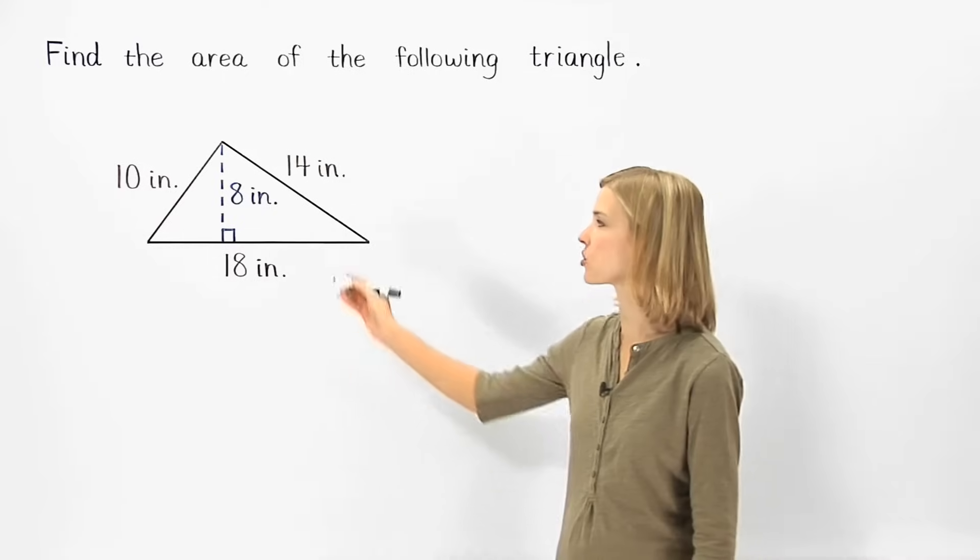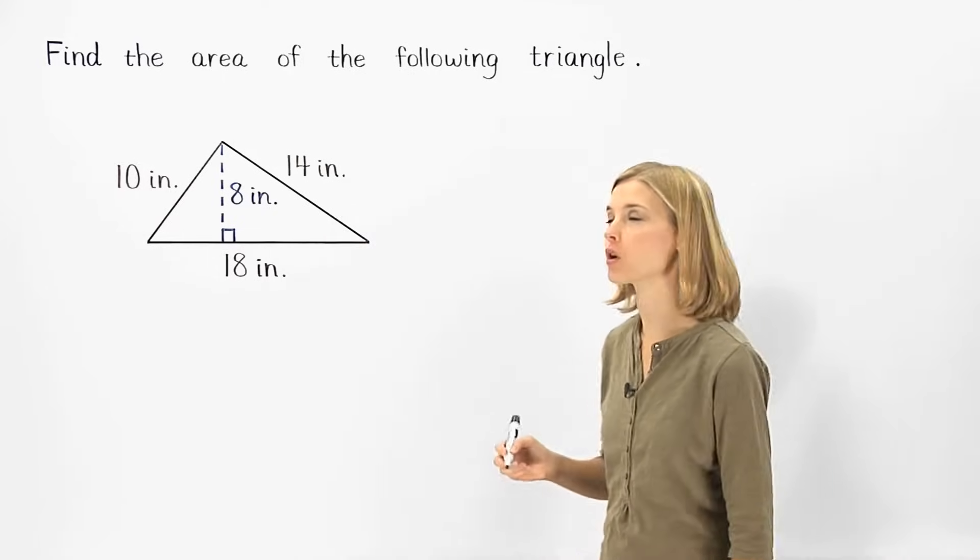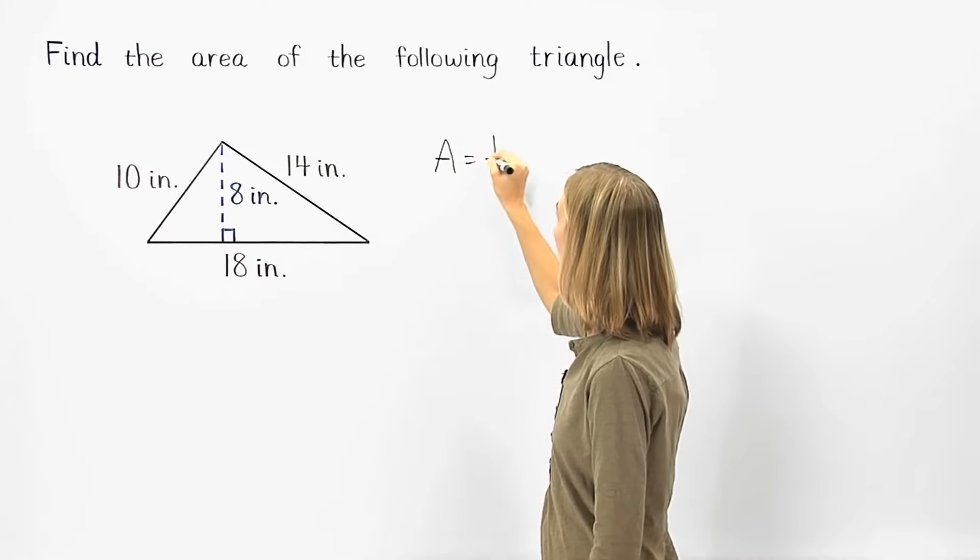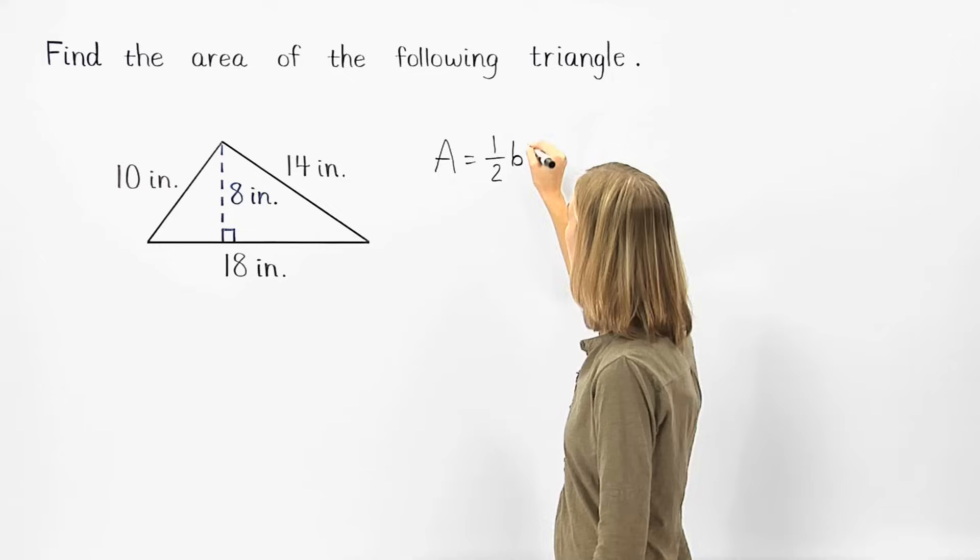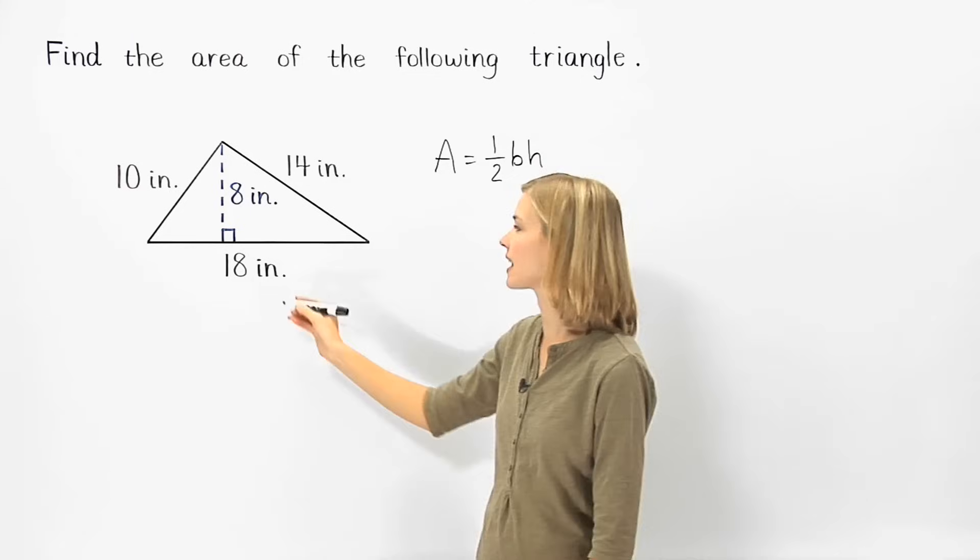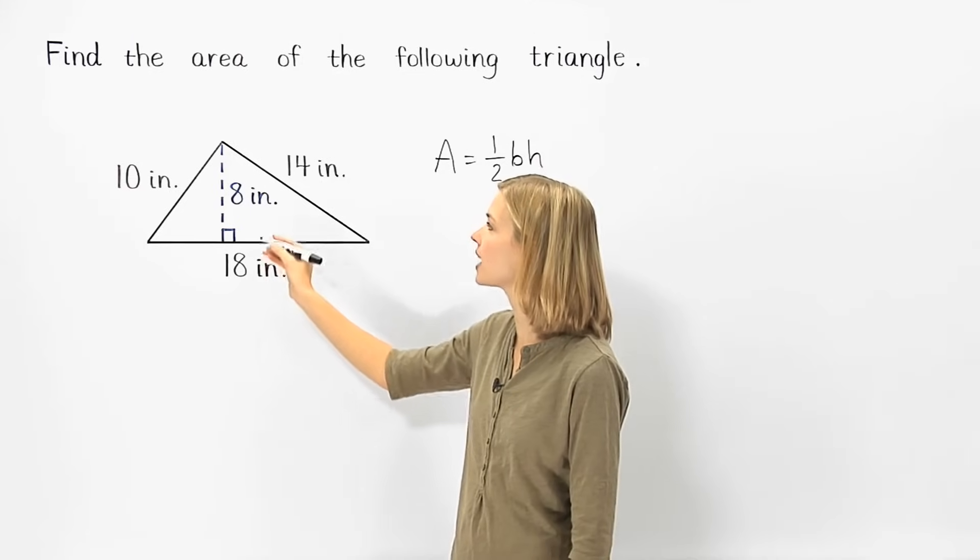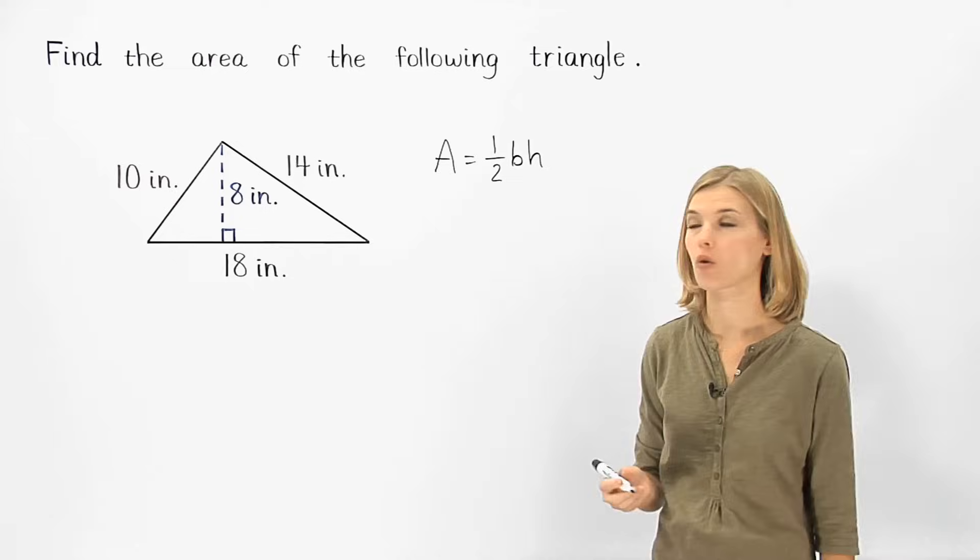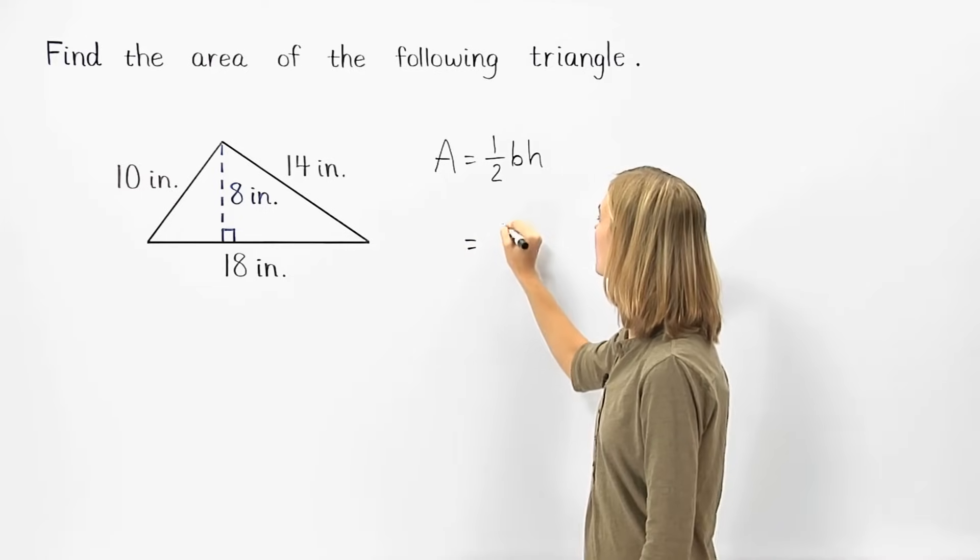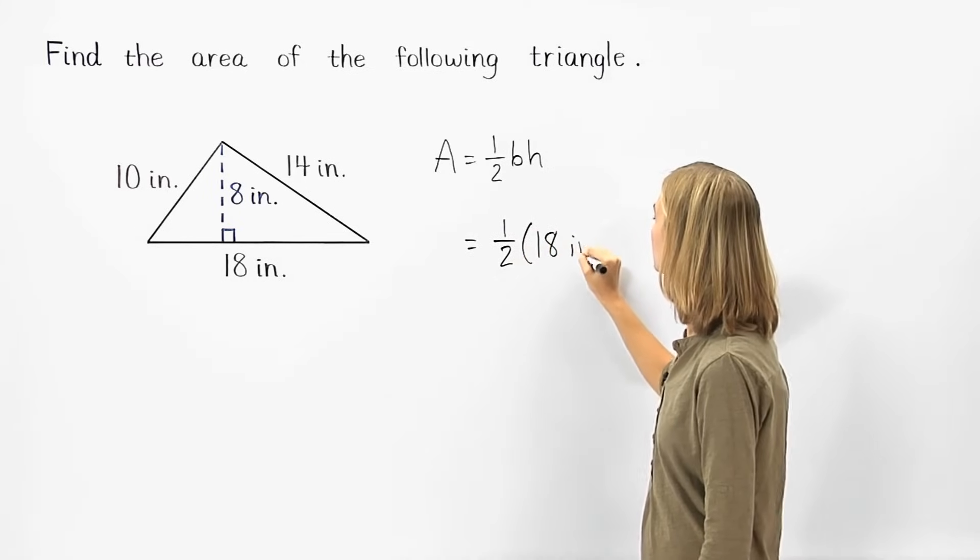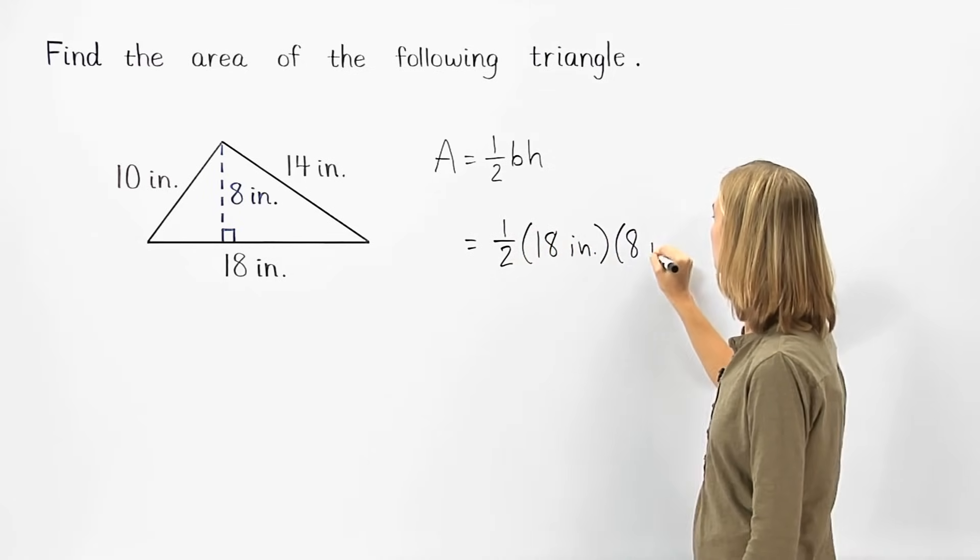To find the area of the triangle shown, we use the formula area of a triangle equals one-half base times height. Since the base of the triangle is 18 inches and the height of the triangle is 8 inches, we can plug this information into the formula to get one-half times 18 inches times 8 inches.